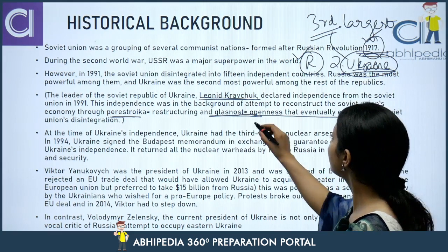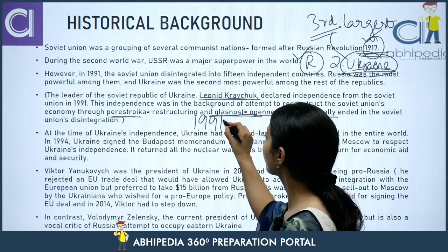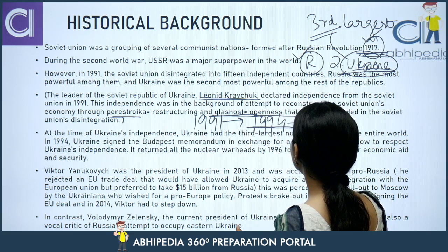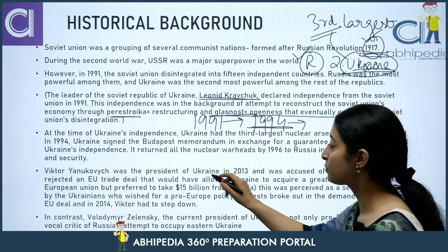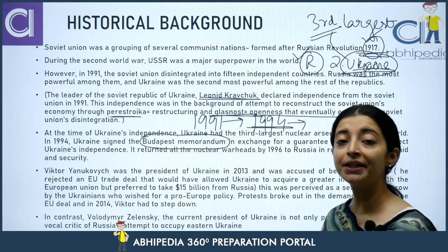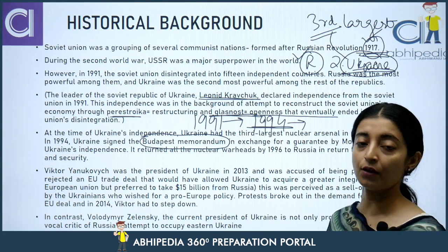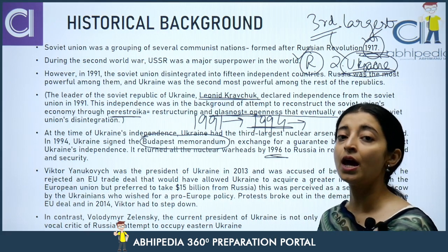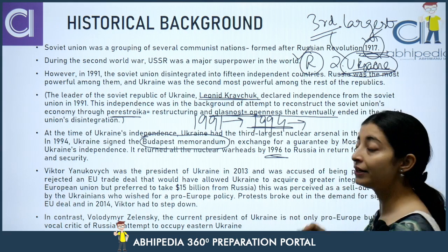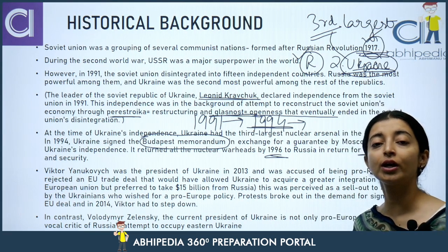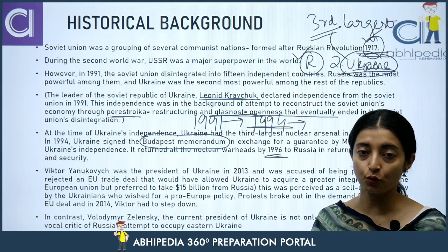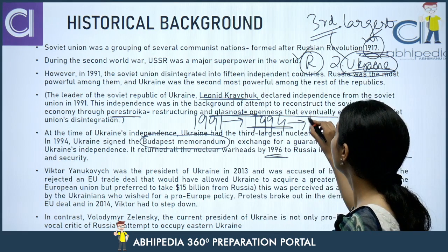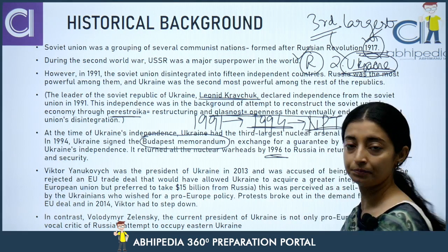In 1991 Ukraine gained independence. Then in 1994, Ukraine signed a memorandum called the Budapest Memorandum. Under this memorandum, Ukraine gave its nuclear arsenal to Russia by the year 1996. The conditions were: Ukraine would receive economic aid and security from Russia, and Russia would recognize and respect Ukraine's independence. Ukraine signed the Budapest Memorandum and became part of the Nuclear Non-Proliferation Treaty (NPT).